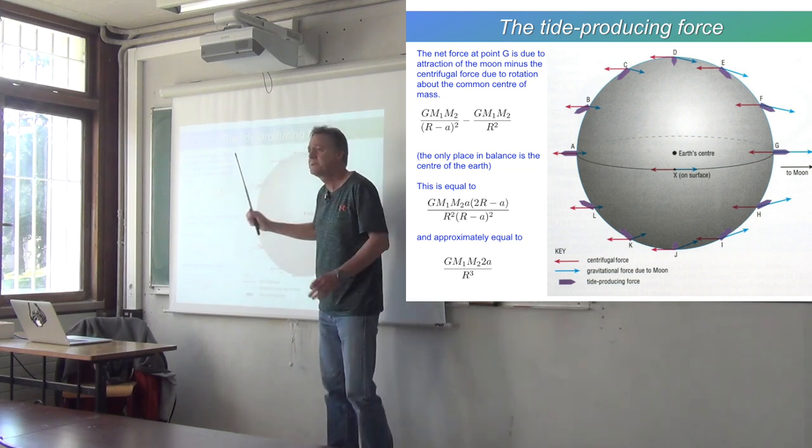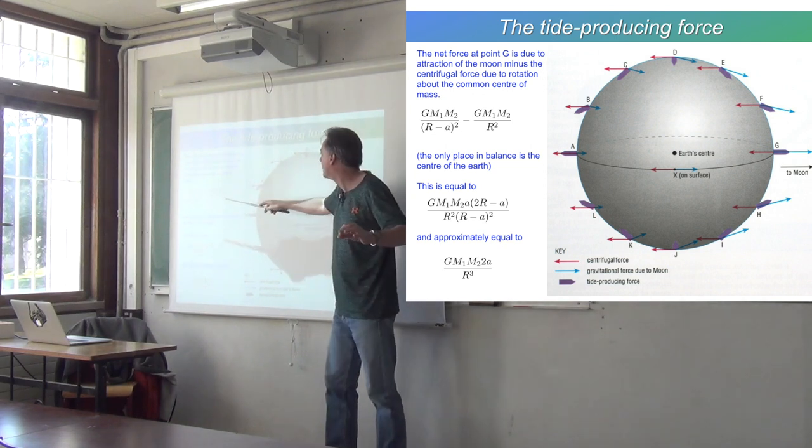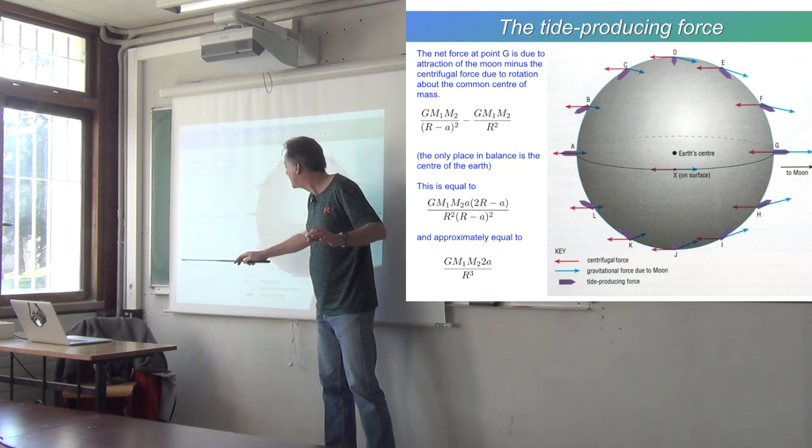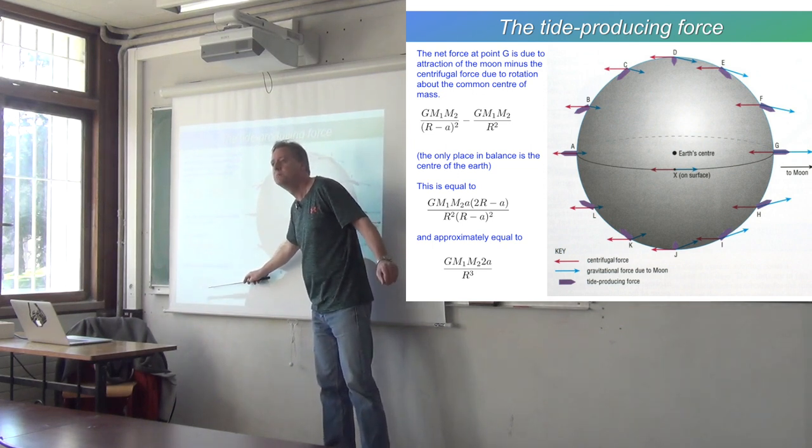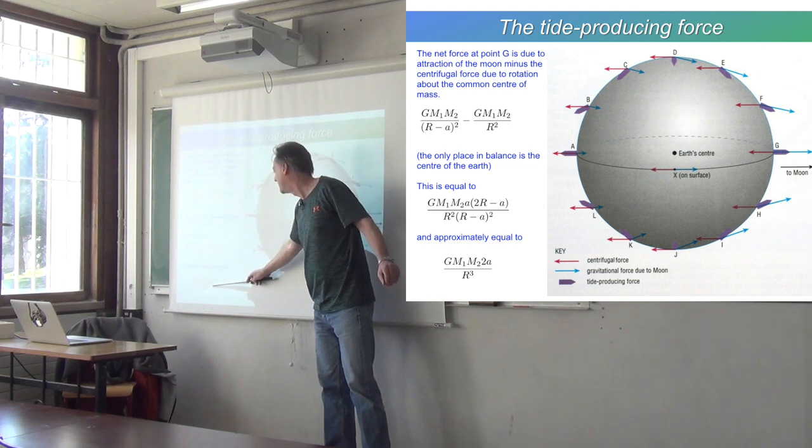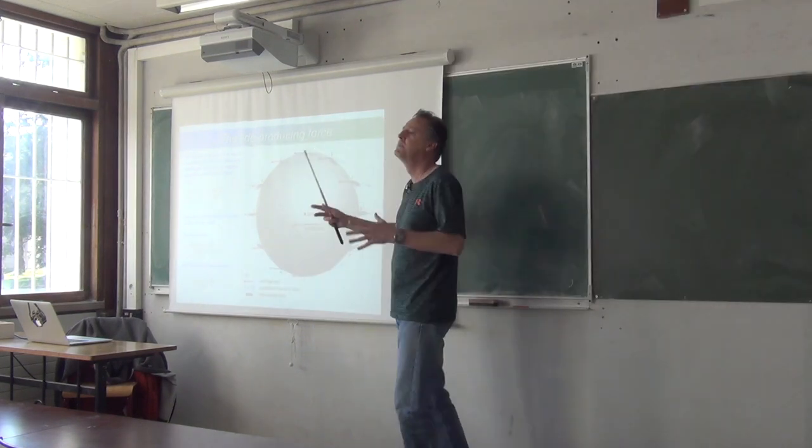So the actual gravitational force between the Earth and the Moon, that's a 1 over R squared law. But the force that generates the tides, that's a 1 over R cubed law, which means that if you're closer to the object it's going to have a much stronger effect. And that's why the Moon is so important.